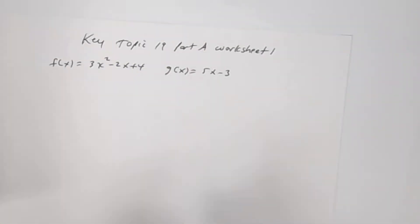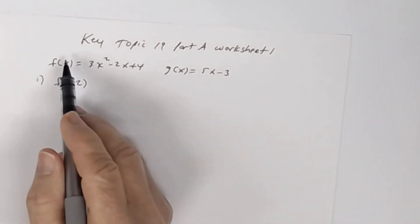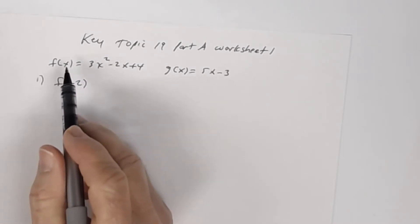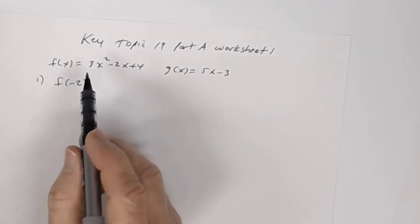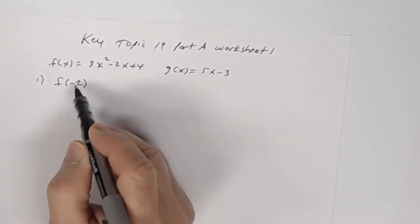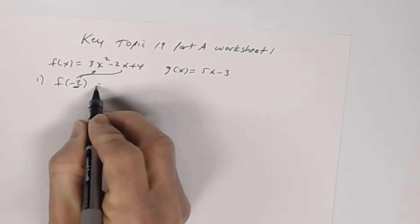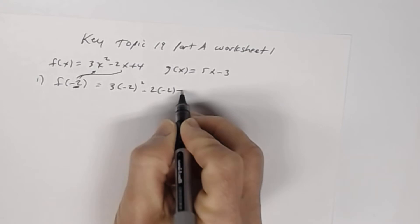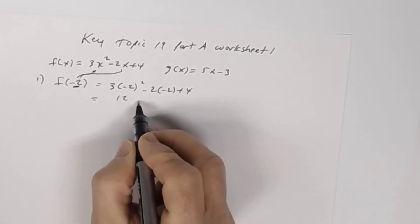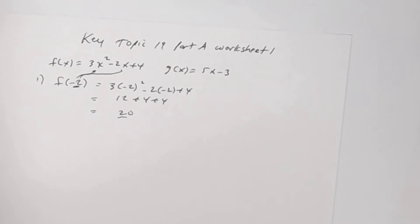Let's look at number 1. You want to find f of negative 2. Remember, these two functions have a name — this is function f of x, and this is function g of x. To find f of negative 2, you go to function f and substitute negative 2 for x. So this becomes 3 times negative 2 squared, minus 2 times negative 2, plus 4. Negative 2 squared is 4; 4 times 3 is 12. Negative 2 times negative 2 is positive 4, plus 4. So 12 plus 4 plus 4 is 20. f of negative 2 equals 20.